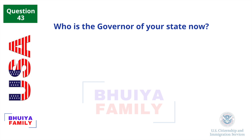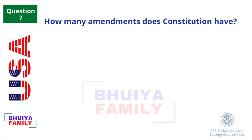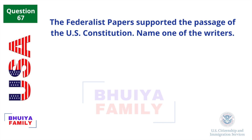Who is the governor of your state now? This answer will vary. How many amendments does the Constitution have? Twenty-seven. The Federalist Papers supported the passage of the U.S. Constitution. Name one of the writers. James Madison.